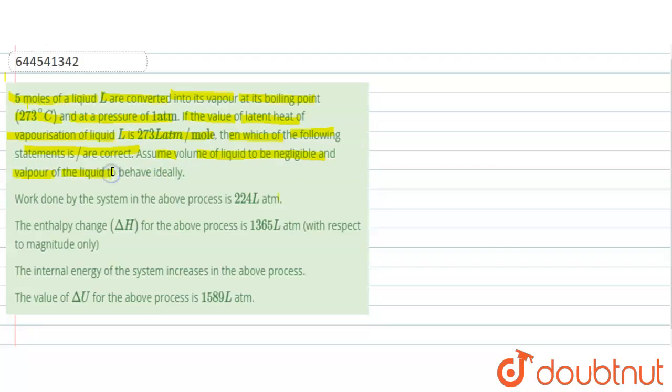We are given four statements. First statement is: work done by the system in the above process is 224 liters atmosphere. Second is: the enthalpy change delta H for the above process is 1365 liter atmosphere with respect to magnitude only. Third statement is: the internal energy of the system increases in the above process. And the last statement is: the value of delta U for the above process is 1589 liter atmosphere.